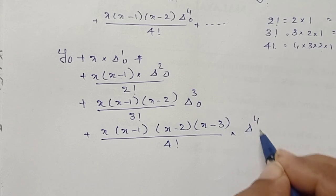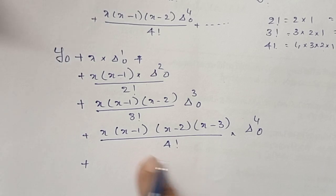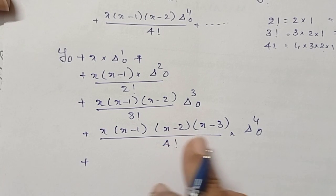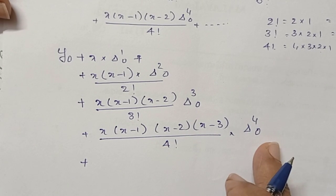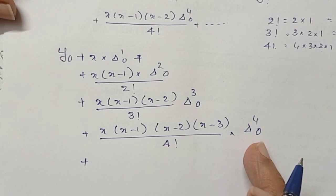Plus x(x-1)(x-2)(x-3)(x-4) divided by 5 factorial into Δ⁵₀.